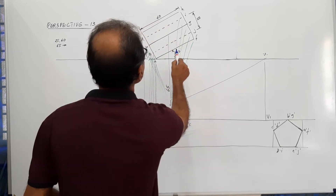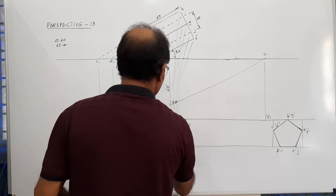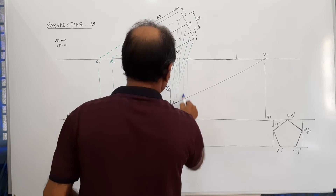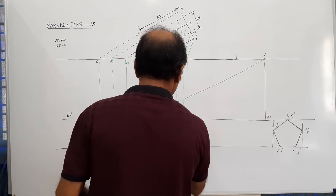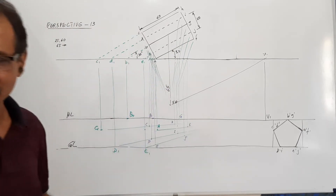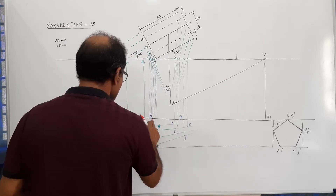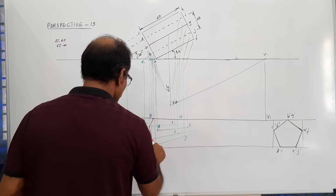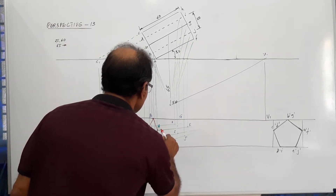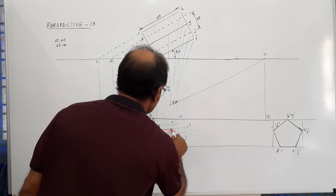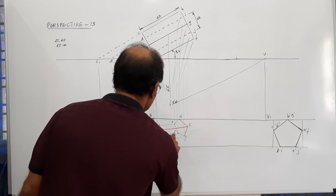Locate back face points G, A, H, I, J. You have got all the points — connect them. Front face, back face, bottom face.